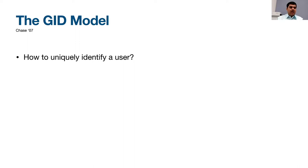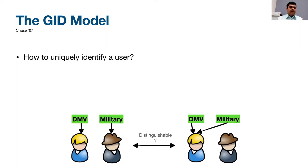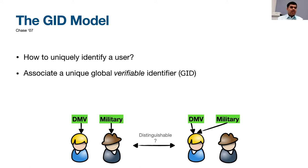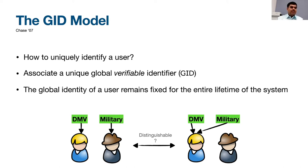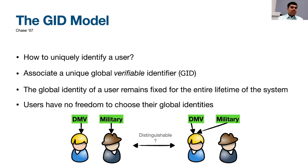The question is how a user can be uniquely identified across different authorities, since without unique identification a user could pretend to be different users to different authorities and obtain keys for attributes they don't possess. To handle this, a model called the global identifier or GID model is used. Each user is assigned a globally verifiable identifier that remains the same for the system's lifetime, and users cannot freely choose their GID — for instance, the social security number could serve as a GID.